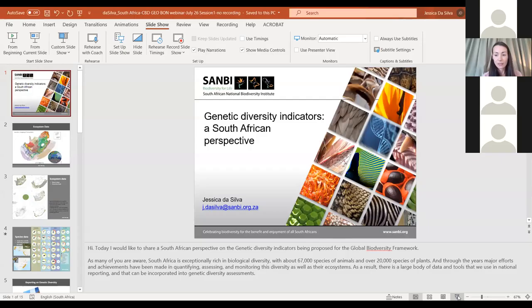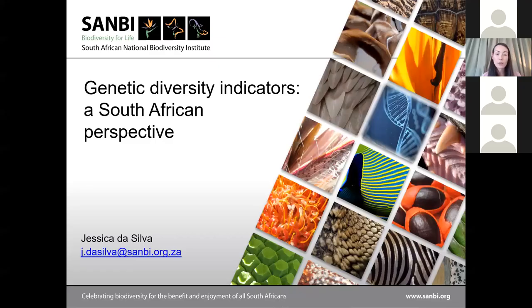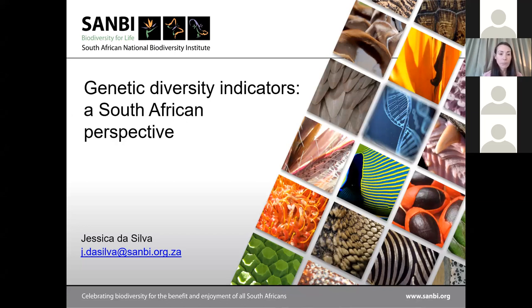South Africa's perspective on the genetic diversity indicators: South Africa is exceptionally rich in biological diversity, with about 67,000 species of animals and over 20,000 species of plants. Major efforts and achievements have been made in quantifying, assessing, and monitoring this diversity and their ecosystems, resulting in a large body of data and tools used in national reporting that can be incorporated into genetic diversity assessments. As of 2018, South Africa has a seamless map of ecosystem types across the terrestrial, marine, freshwater, and estuarine realms, with each ecosystem type having a threat status and protection level.